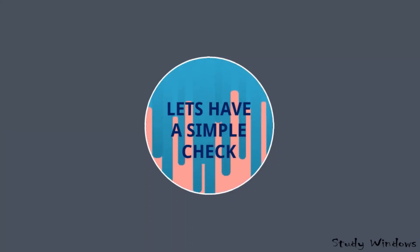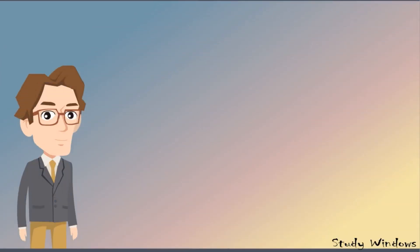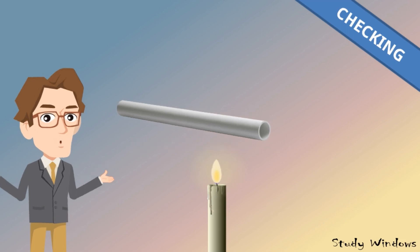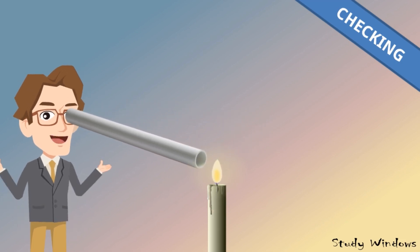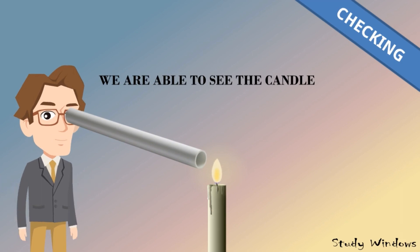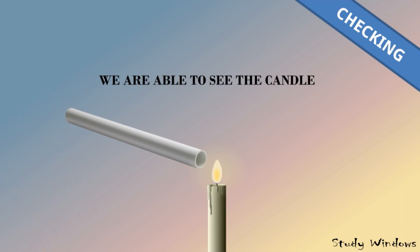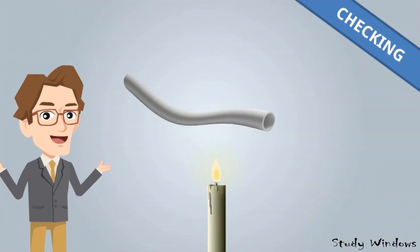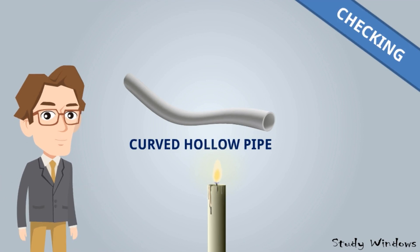Let's do a simple check. We will take a straight hollow pipe and one burning candle. We'll try to see the candle through the pipe, and we are able to see it. The straight pipe allows us to see the candle because light coming from the candle travels through the straight pipe and reaches our eyes.